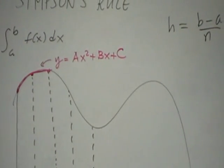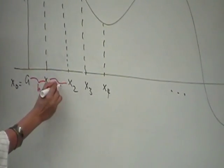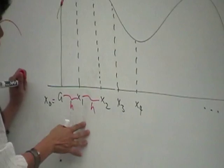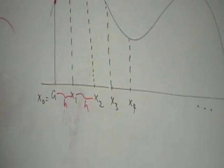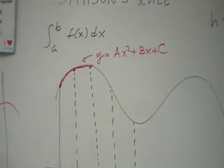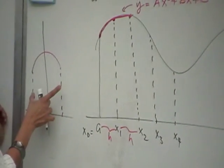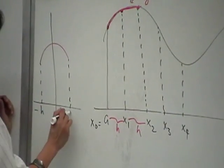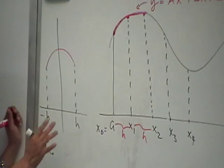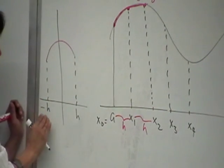Over these two subintervals, each of length h, to simplify the problem, let's look at just this arc. We don't even know where the origin is, so let's place it at the center. That means we're integrating from negative h to h, looking at the area bounded by this parabola from −h to h.